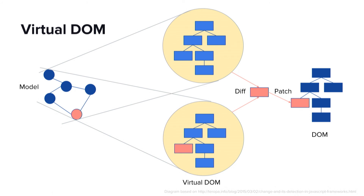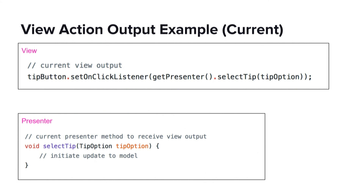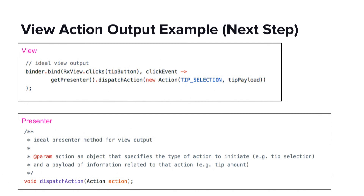Now let's look at what we're doing for the output of the view in our rate and pay feature. Currently, our feature defers to the presenter to do the business logic operation, but we want to make our solution for the output of the view generic. One of the ideas we're considering is beginning with RxBindings. RxBindings allows us to create observable streams of user input events. Then we can map the user input events to Redux-like actions, where the action is an object that contains an action ID — such as tip selection — and also an action payload with information related to that action, such as the amount of the tip selected.